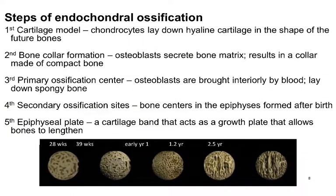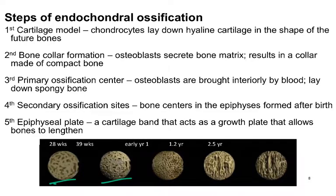For those of you that like things written out, you can read through this slide at your leisure. The image on the bottom shows over the course of embryonic development — 28 weeks, 39 weeks of fetal development — what bone looks like, and then early in the first year, a year and a couple of months, and finally two and a half years, as the bone becomes more mature.